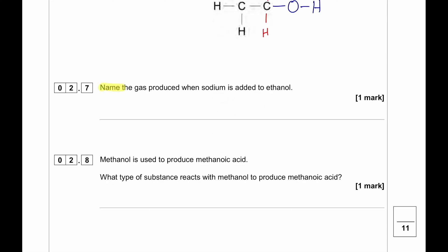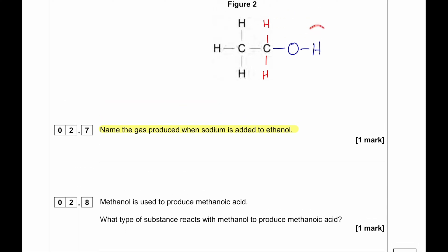Name the gas produced when sodium is added to ethanol. When sodium is added to ethanol, this hydrogen gets displaced. So obviously hydrogen will be produced.